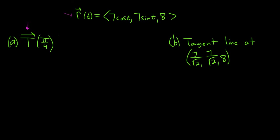It turns out that if you plug in π/4 into this vector-valued function, you'll get this point. So this vector here is going to be our parallel vector that we're going to use when it comes time to do part b.